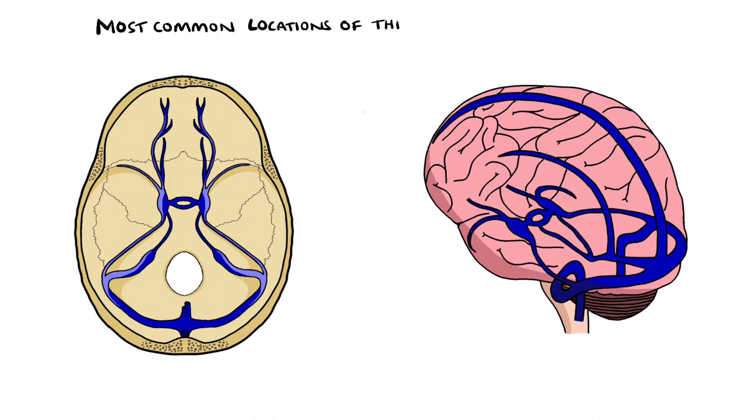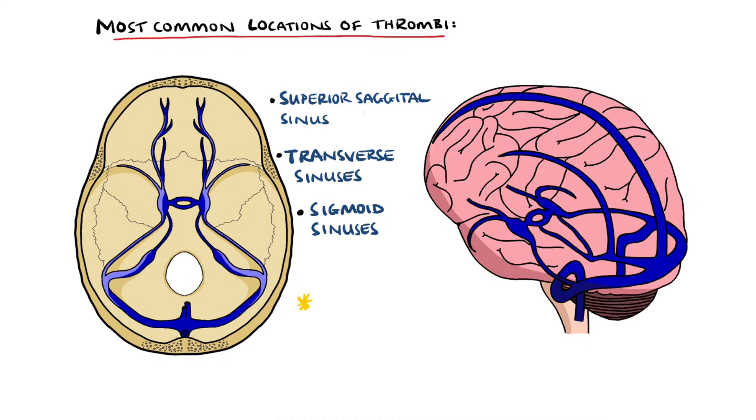The most common locations for a thrombus to form are the superior sagittal sinus, the transverse sinuses, and the sigmoid sinus. Remember as well that most patients actually have multiple sinuses involved.